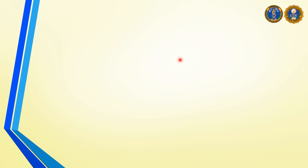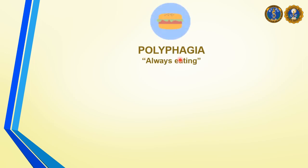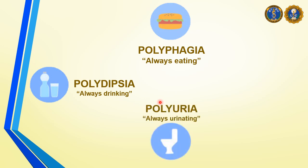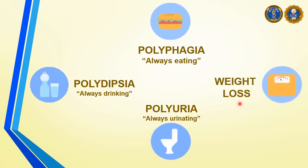Here are the classic symptoms and signs of a patient with diabetes. First, polyphagia — always eating, always hungry. Polydipsia — always thirsty, always drinking. Polyuria — because they always drink, they also frequently urinate. And lastly, weight loss. It is not always true that just because someone is overweight they are diabetic — sometimes thin patients have uncontrolled blood sugar.